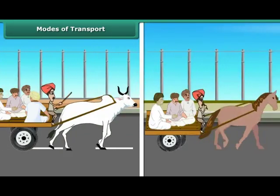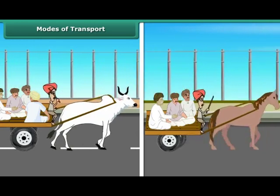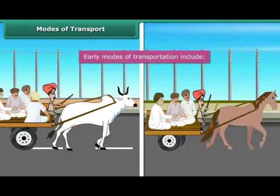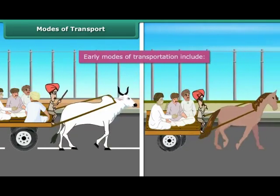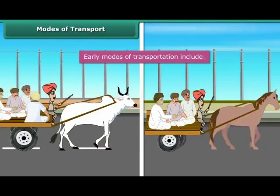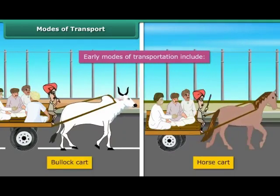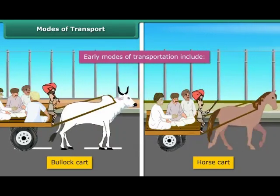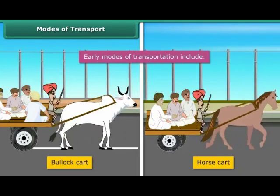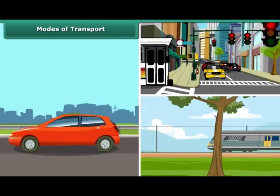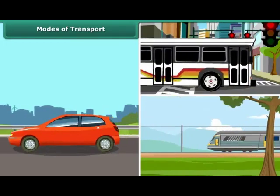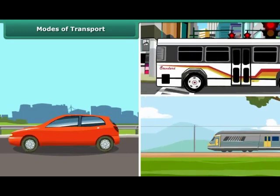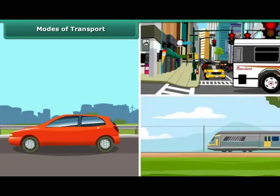Modes of transport. Have you wondered how people travelled in the earlier days? In the early days, people have always used animals to travel from one place to another. For example, bullock cart, horse cart, etc. Can you imagine using a bullock cart to come to school every day now? Nowadays, we have progressed and we have learnt we can use fuel and natural resources to create better modes of transport.